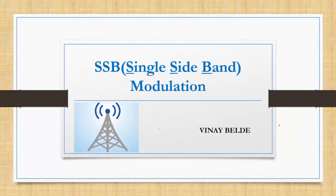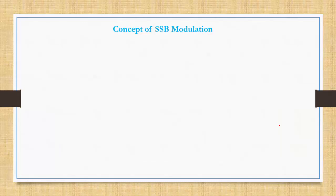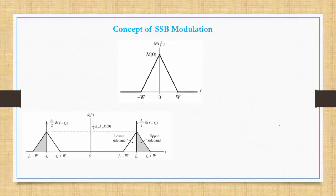Hi, welcome to the Analog Communication course. In this video we will learn the concept of Single Sideband modulation. First we will see the spectrum of conventional AM. Assuming the spectrum of the message signal is band-limited to W, the spectrum of conventional AM contains three things: upper sideband, lower sideband, and the carrier component.